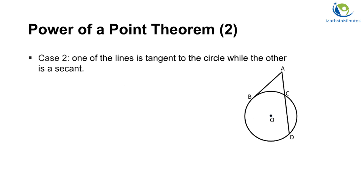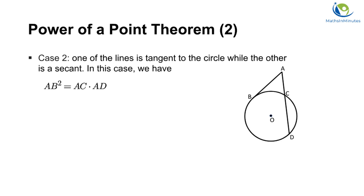In case 2, line AB is tangent to the circle at point B, while line AD is a secant of the circle intersecting the circle at points C and D. In such a case, we have AB squared equal to AC times AD.